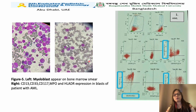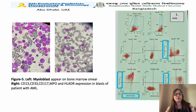This figure shows a bone marrow morphological examination revealing myeloblasts, and the immunophenotyping report shows CD13, CD33, MPO, CD117, and HLA-DR positive — this report corresponds to acute myeloid leukemia.